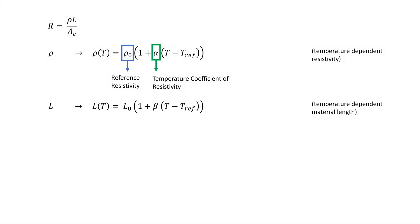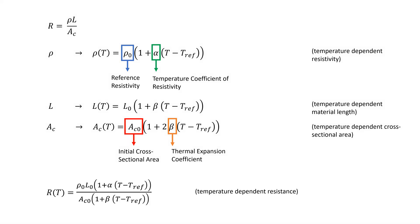The cross-sectional area and the length follow a very similar formula. Here, β is the thermal expansion coefficient of the material. All three of these come from the first two terms of the Maclaurin series of 1 plus x. Combining all three, we could get that the temperature-dependent resistance of our coil is given by this formula.